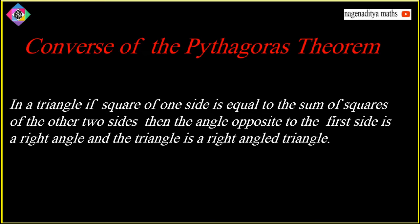What is the statement of the Pythagoras theorem? In a triangle, if the square of one side is equal to the sum of squares of the other two sides, then the angle opposite to the first side is a right angle and the triangle is a right angle triangle.